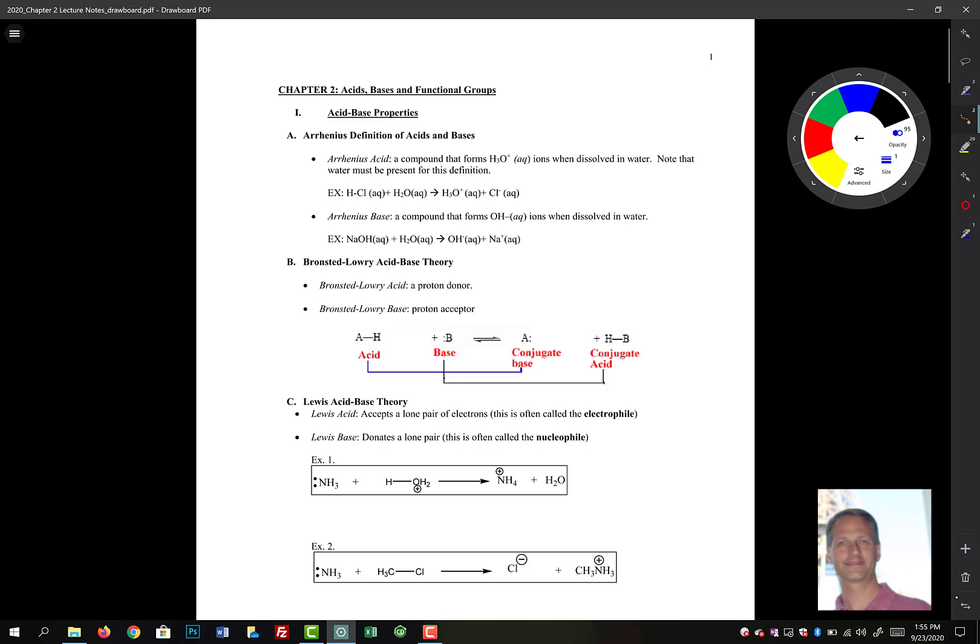The second type is a Bronsted-Lowry. That deals with the flow or the movement of protons. An acid is a proton donor and a base is a proton acceptor. You may remember from GChem seeing something like this. We have HA, or in this case I wrote AH, an acid reacting with some generic base. What happens in essence is that the base would come over and steal away that hydrogen to form the conjugate acid.